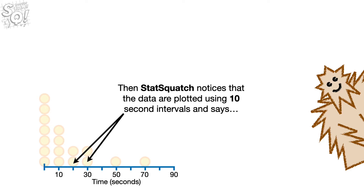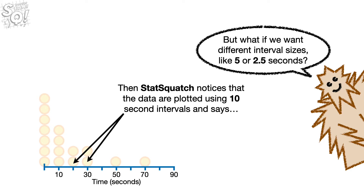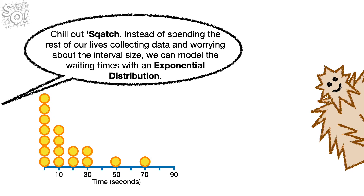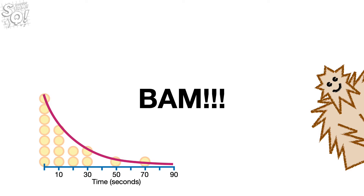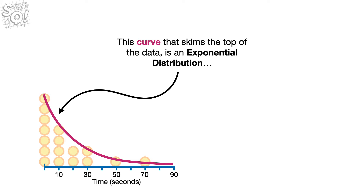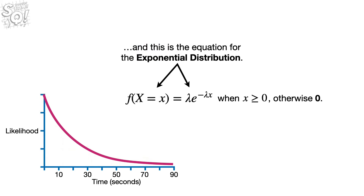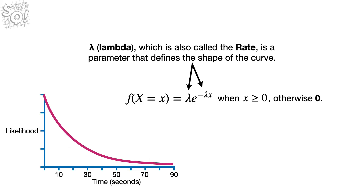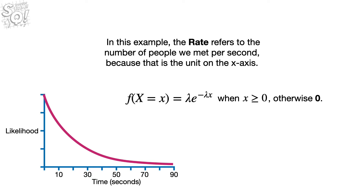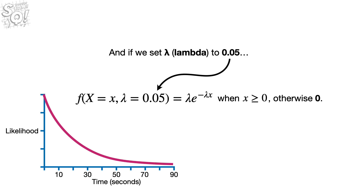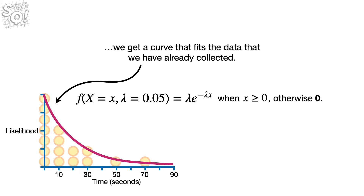Statsquatch notices the data are plotted using 10-second intervals and asks about different interval sizes like 5 or 2.5 seconds. You tell Statsquatch: 'Instead of spending the rest of our lives collecting data and worrying about the interval size, we can model the waiting times with an exponential distribution.' This curve that skims the top of the data is an exponential distribution. Lambda, also called the rate, is a parameter that defines the shape of the curve. In this example, the rate refers to the number of people we meet per second. Setting lambda to 0.05 gives a curve that fits the data.